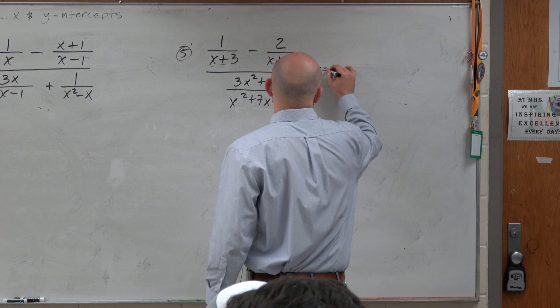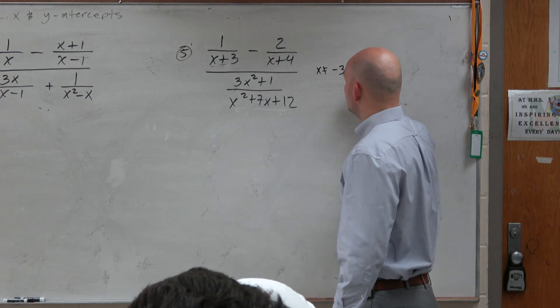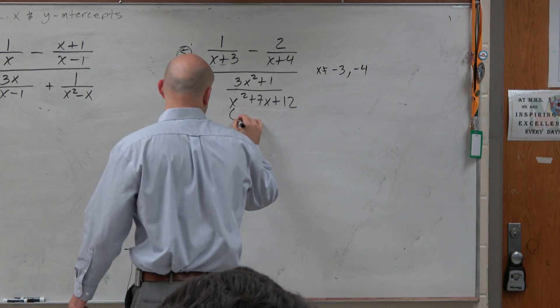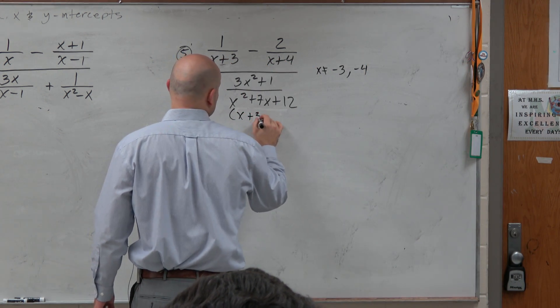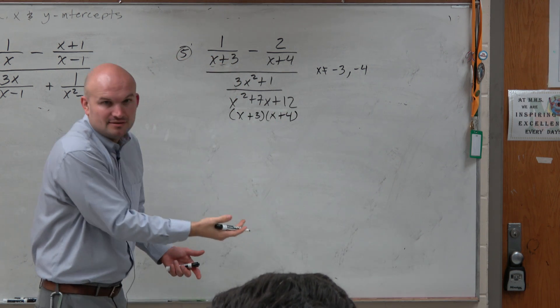So we can say x cannot equal negative 3, negative 4. And then here, you notice that this is conveniently factored to x plus 3 and x plus 4. So I don't need to rewrite that, correct?